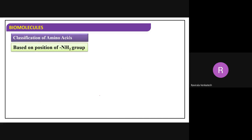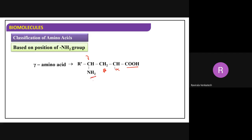This is the thing you need to remember. Gamma amino acids means the NH2 group is present on the gamma carbon - third carbon from the functional group. Glycine is an example of what type? Alpha amino acids.